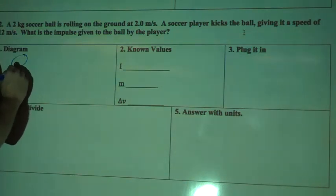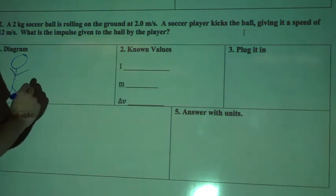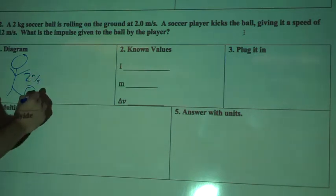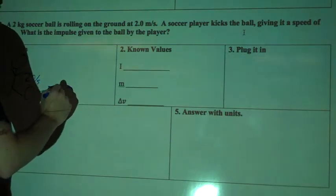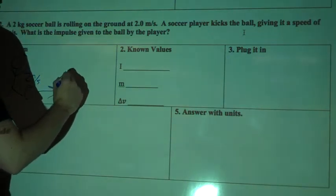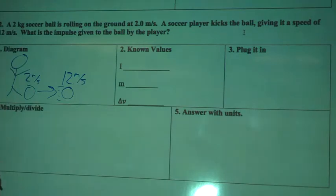So let's draw our diagram. They're standing there and they're kicking the soccer ball which was originally traveling at 2 meters per second, and they changed the velocity to 12 meters per second.